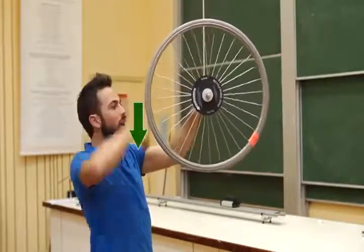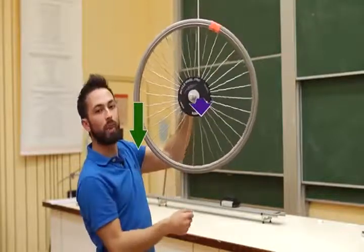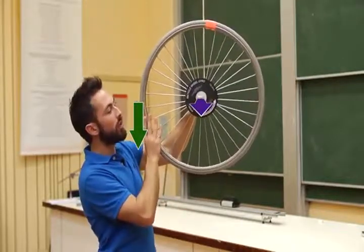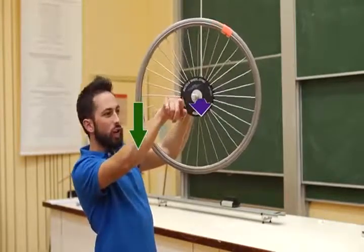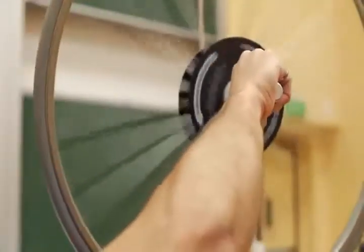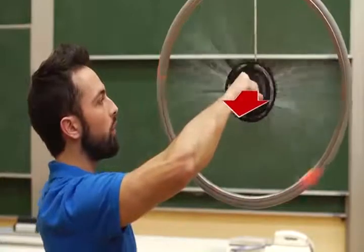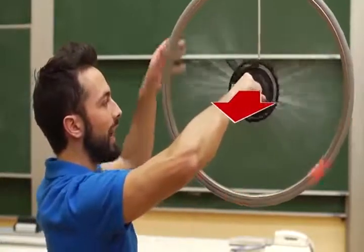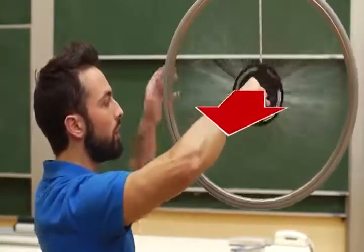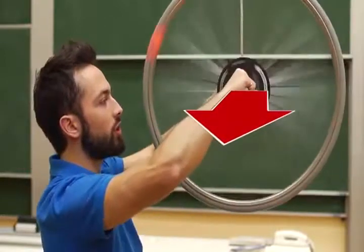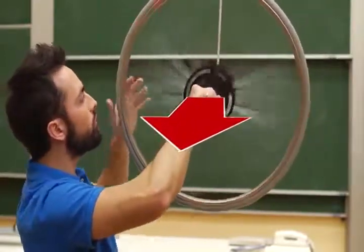So the torque is actually out this way, at 90 degrees to the force. The force is down that way, but the torque vector is actually pointing out this way. So the angular momentum of this wheel is being increased in that direction. The more I apply this torque, the more I increase the angular momentum of the wheel in the direction of the torque. So I'm making this wheel have a very large angular momentum out towards the camera, out towards you.